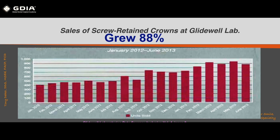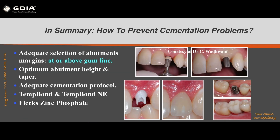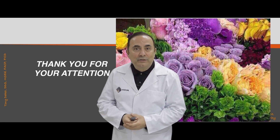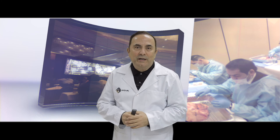In summary, you must carefully select good abutment margins — preferably at or above the gum line — with optimum abutment height and taper for better retention of your cement retained crowns. You must also follow a good cementation protocol. The best cement, according to Dr. Wadhwani, is the 10 Bond, with flex zinc phosphate as the second choice. Thank you for your attention, and don't forget to get involved with the Global Dental Implant Academy, GDIA.